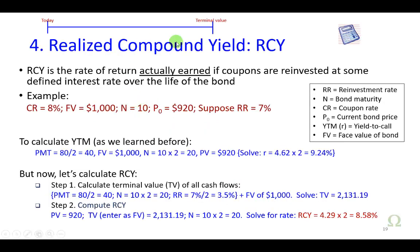Finally, there is the realized compound yield, which is the rate of return you're actually going to be receiving if, when you pick up the coupons each semi-annual period, you reinvest them at an interest rate other than the yield to maturity on the bond. Let's assume that when you receive your $40 every six months based on this coupon of 8%, you can be reinvesting those coupons at 7% per annum — called the reinvestment rate. Based on the data, let's assume this bond is selling at a discount for $920. We can easily solve for the yield to maturity on this bond, which comes out to be 9.24%.